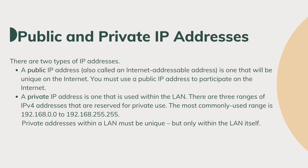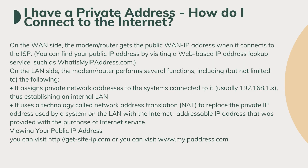Next is public and private IP addresses. A public IP address is one that will be unique on the internet — you must use a public IP address to participate on the internet. A private IP address is the one used within the LAN or local area network only. The router assigns private network addresses to systems connected to it and uses a technology called Network Address Translation to replace the private IP address with the public internet address.